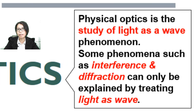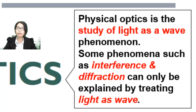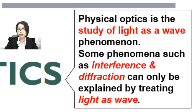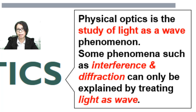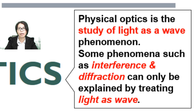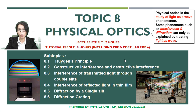Physical Optics is the study of light as a wave phenomenon. Before this, in Topic 7, we talked about Geometrical Optics whereby we treat light as moving in a straight line. So when we move on to Topic 8, we are going to study light as a wave. Some phenomena such as interference and diffraction can only be explained when we treat light as a wave.